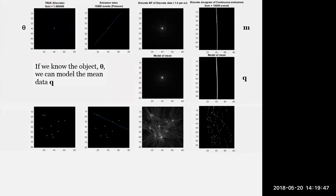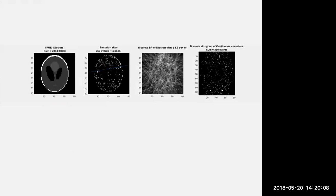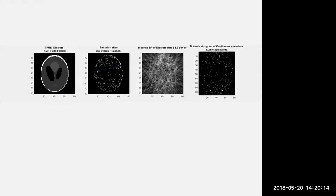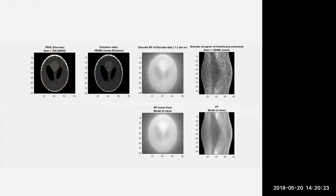We can model the mean of the data just by taking line integrals — rotating those lines around. We do forward projections along those lines to generate a noise-free model of the mean, which I'm calling q, distinct from the noisy data vector m obtained from the PET scanner. Going to the famous Shepp-Logan phantom: as we collect more and more counts, the noise reduces — with low counts it's evidently noisy, with high counts we get a cleaner result, and we model the mean by doing the line integrals.